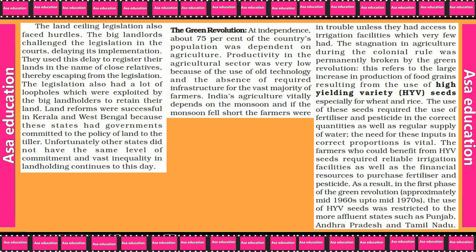The Green Revolution. At independence, about 75% of the country's population was dependent on agriculture. Agricultural productivity was very low because of the use of old technology and the absence of required infrastructure for the vast majority of farmers. India's agriculture widely depends on the monsoon, and if the monsoon fell short, the farmers were in trouble unless they had access to irrigation facilities, which very few had.